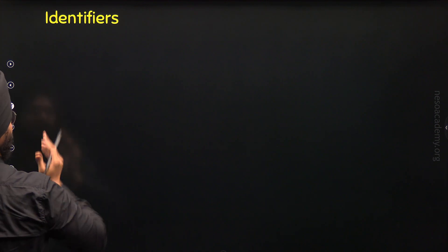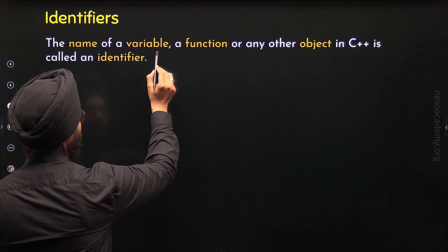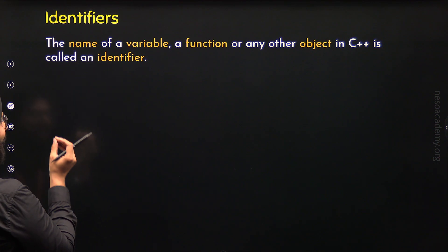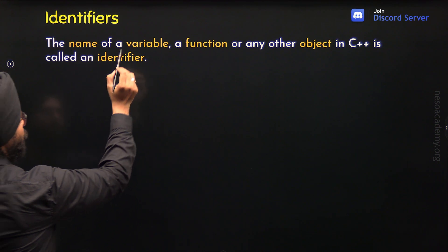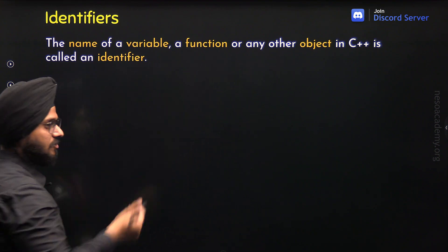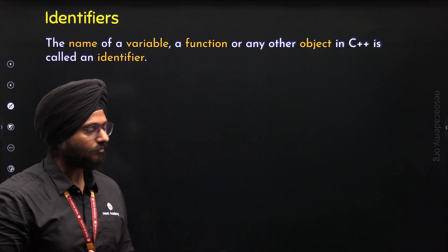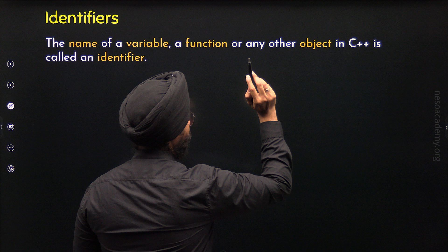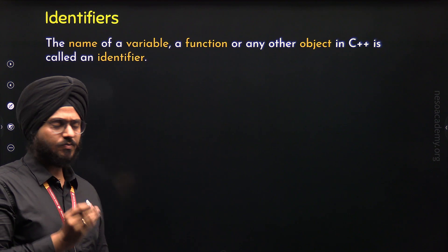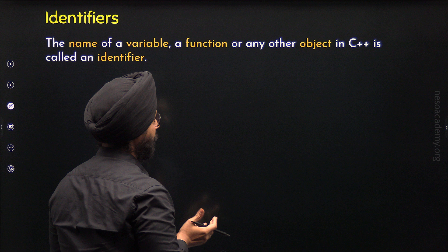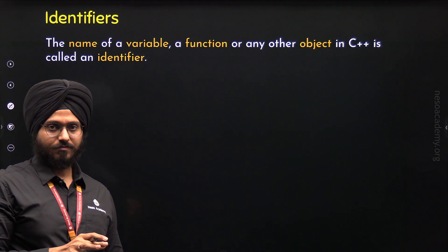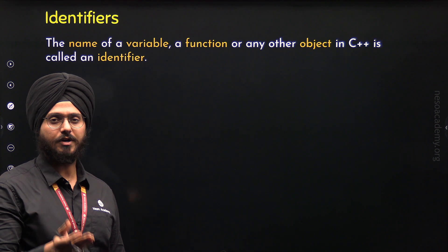The name of a variable, a function, or any other object in C++ is called an Identifier. So an Identifier is just a name given to these entities — that is, variable, function, or some object. Let's first understand the meaning of Object. An object represents a storage location where we can store some value, which means it represents a memory location. A named object is what we call a variable, so a variable represents a named location. When we give that storage location a name, we call it a variable.